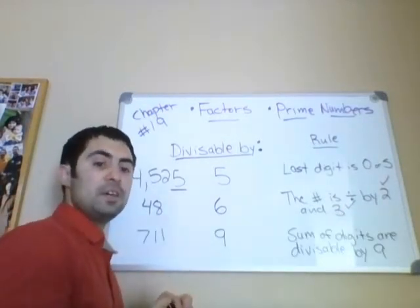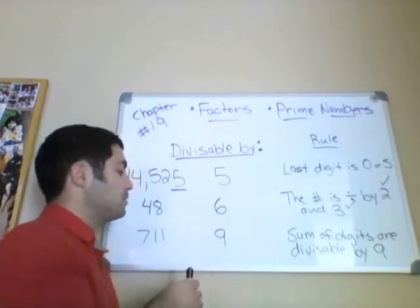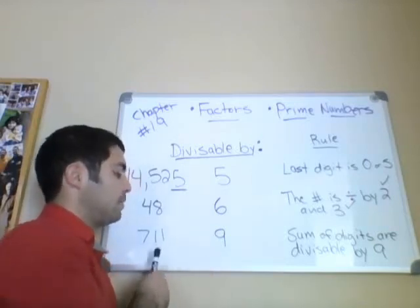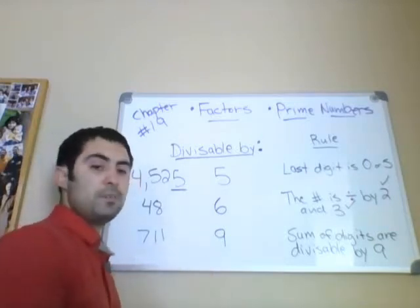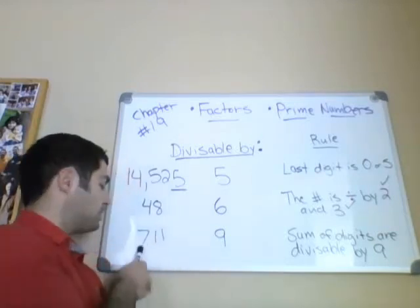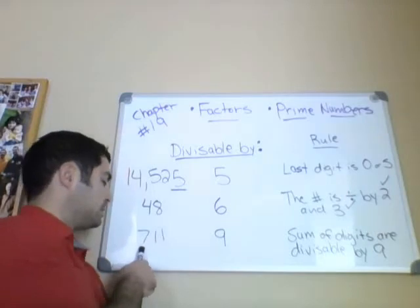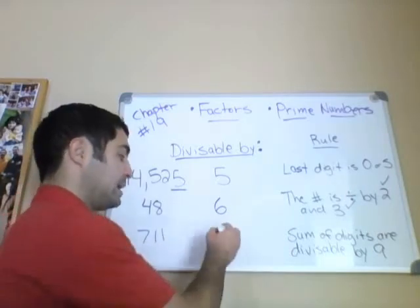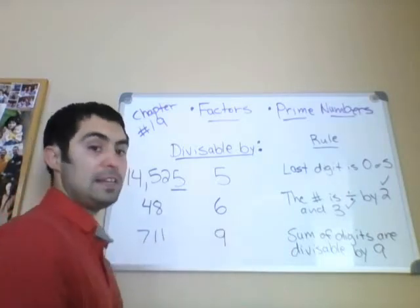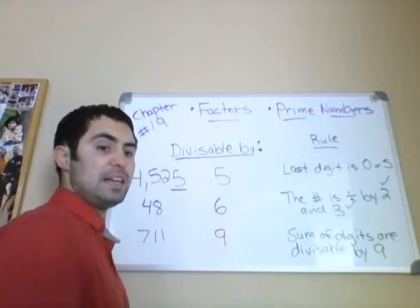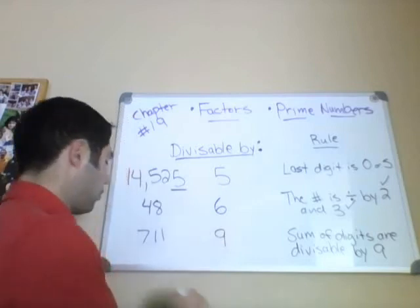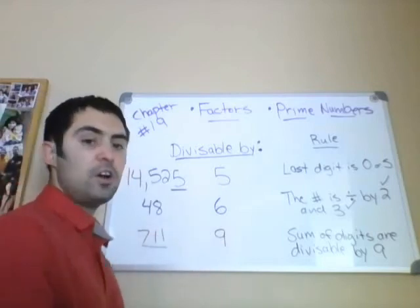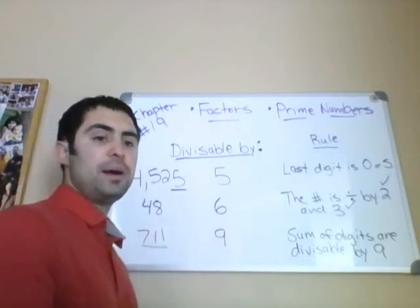If the sum of the digits is divisible by 9, then the number is divisible by 9. What's the sum of the digits of 711? 7 plus 1 plus 1 is 9. Is 9 divisible by 9? The answer is yes. Therefore, 711 is also divisible by 9.